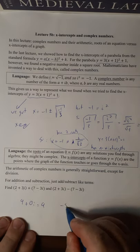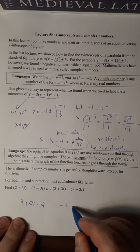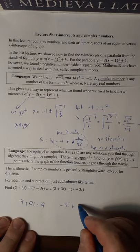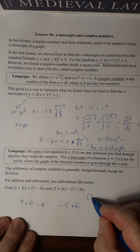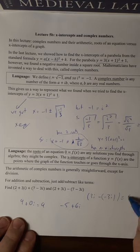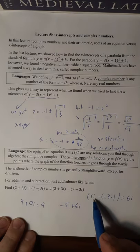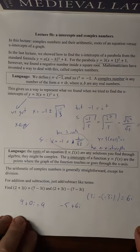Subtraction, 2 minus 7 is minus 5. 3i minus minus 3i is 6i. So 3i minus minus 3i, the minus minus becomes a plus. So it becomes 3i plus 3i, which is 6i.